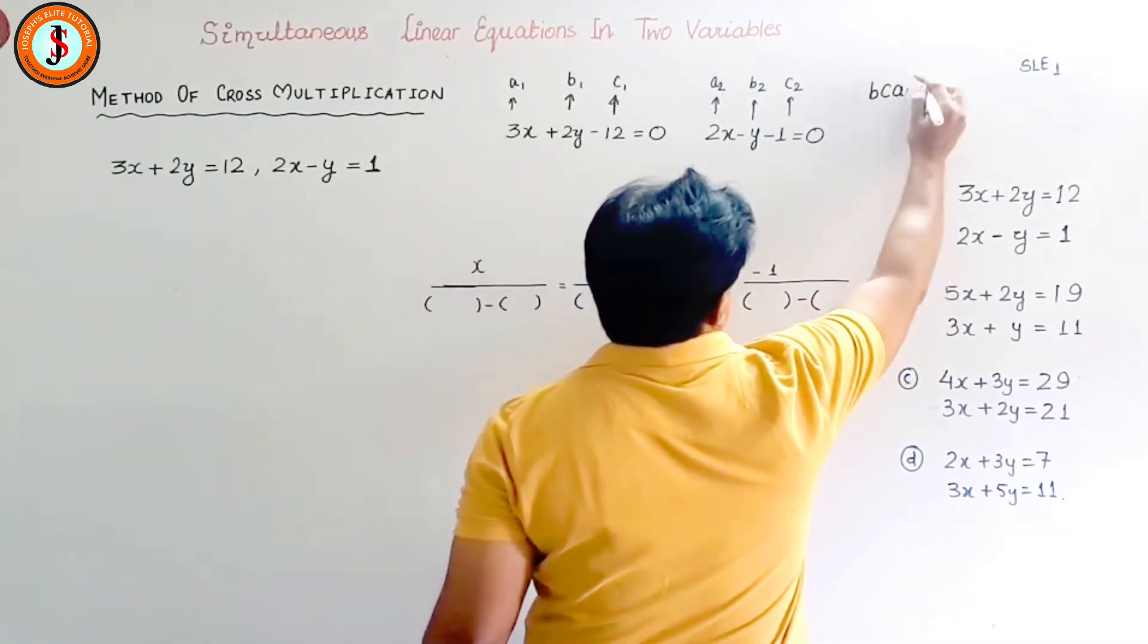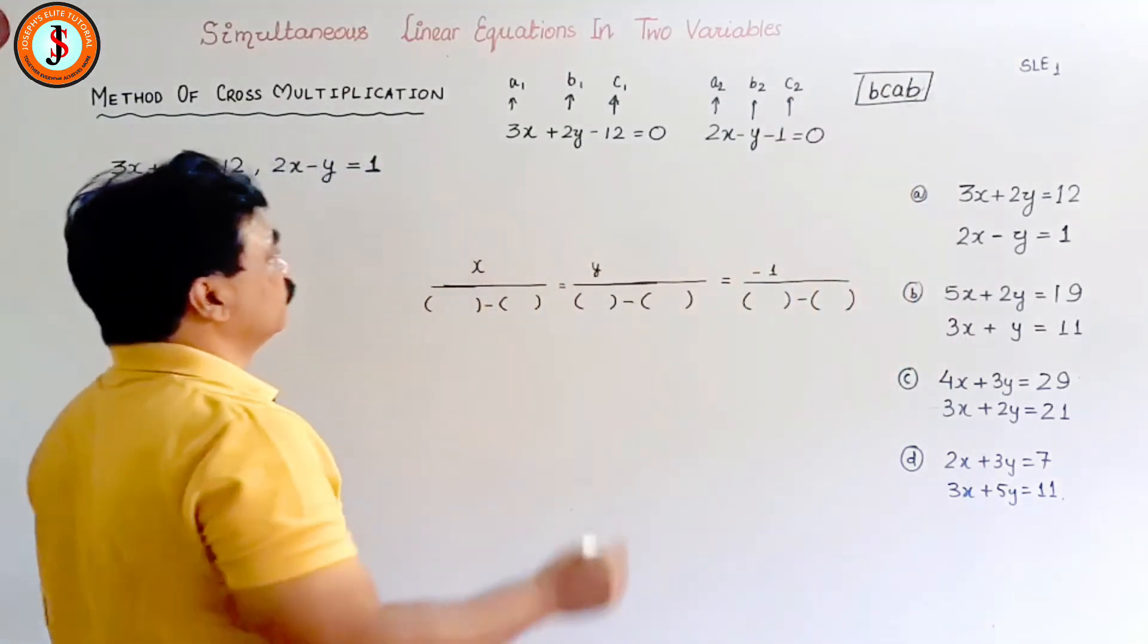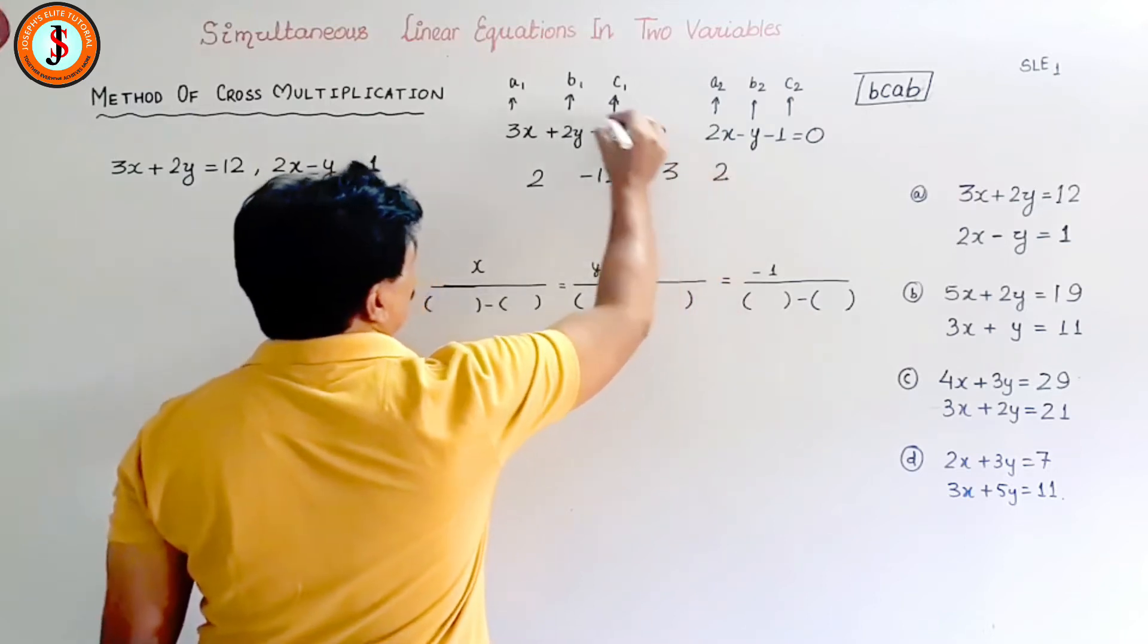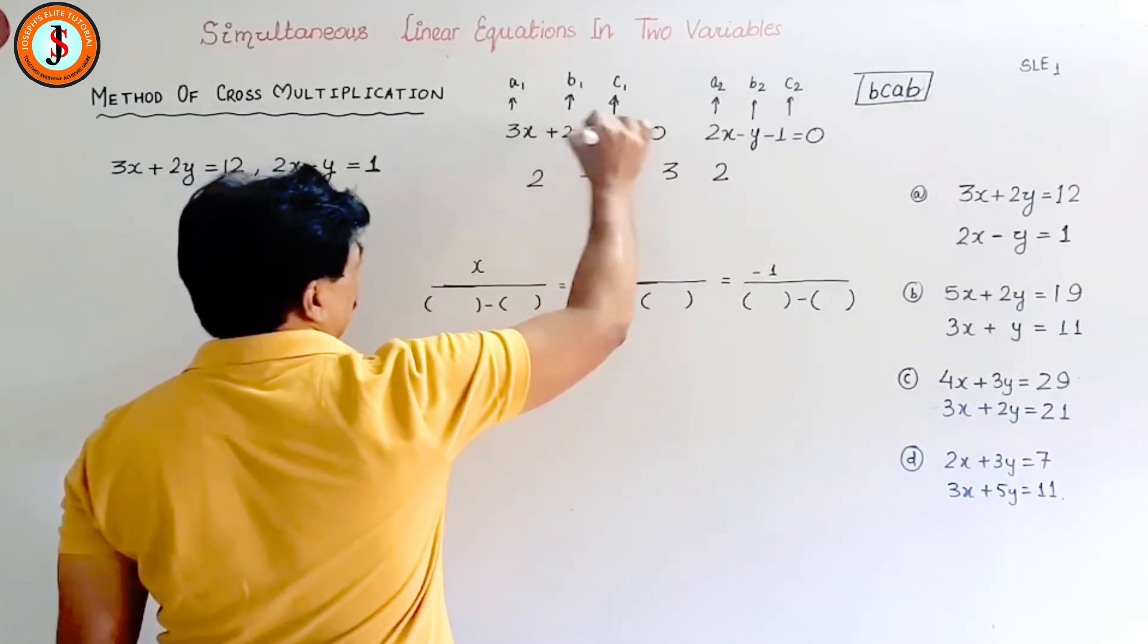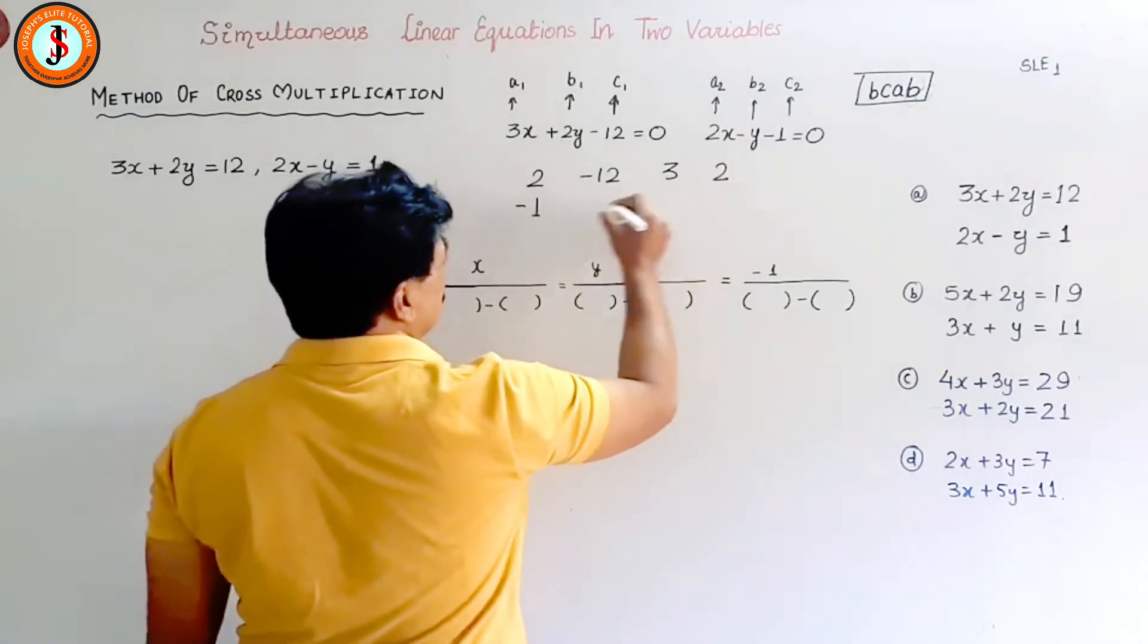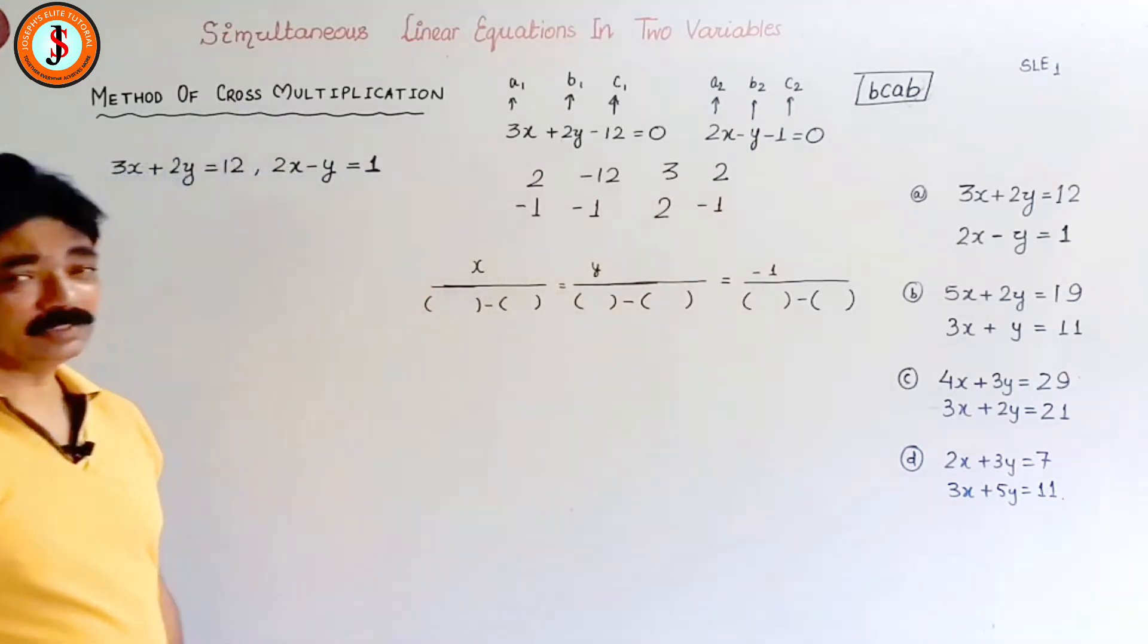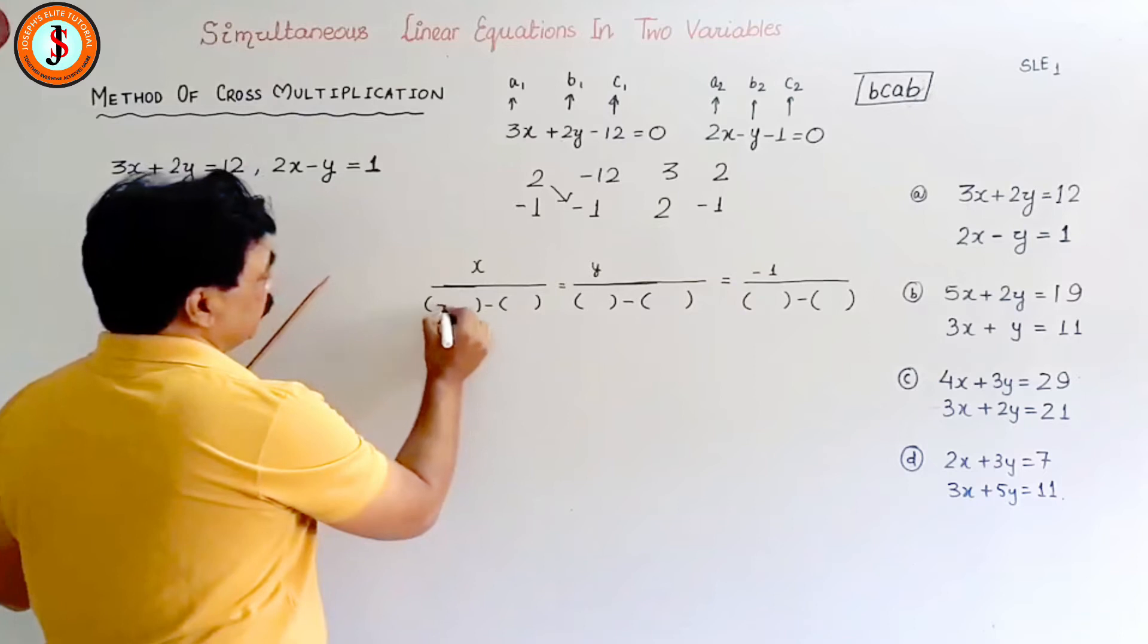So then you remember an order of b, c, a, b. So write your numbers in this form: b, c, a, b. For this one, b, c, a, and b. Now for that also, b so minus 1, c again minus 1, a is 2, and b is minus 1. Now it will become very simple. Multiply: this 2 into minus 1 is minus 2.